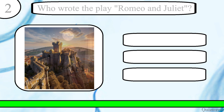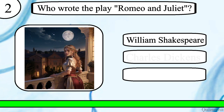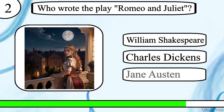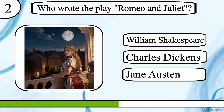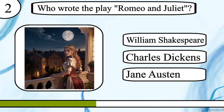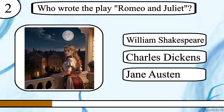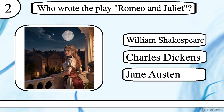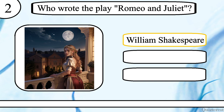Question 2. Who wrote the play Romeo and Juliet? William Shakespeare, Charles Dickens or Jane Austen? The correct answer is William Shakespeare.